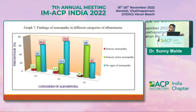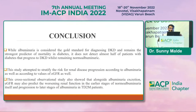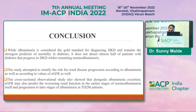In conclusion, it is very important to identify diabetic kidney disease early to prevent progression to CKD. While albuminuria is considered the gold standard for diagnosing diabetic kidney disease and remains the strongest predictor of mortality in diabetes, it does not detect almost half of patients with diabetes who progress to diabetic kidney disease while remaining normal albuminuric. This cross-sectional observational study showed that alongside albuminuria excretion, eGFR may also be helpful in predicting worsening renal function in the early stages of normal albuminuria and progression to later stages in type 2 diabetes mellitus patients.